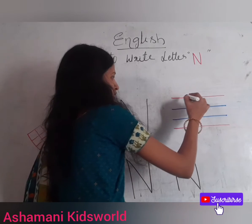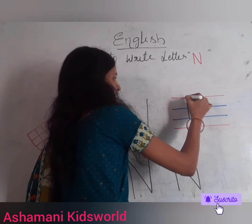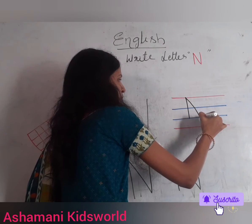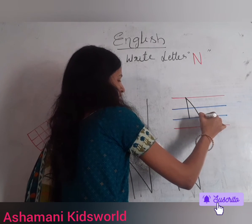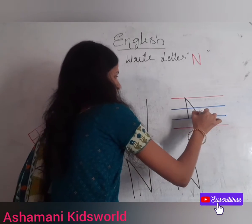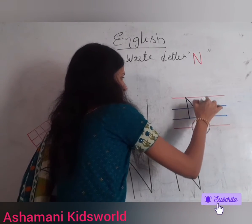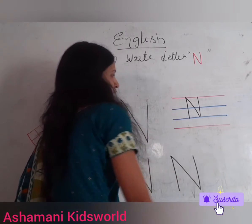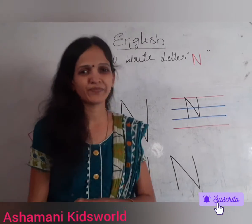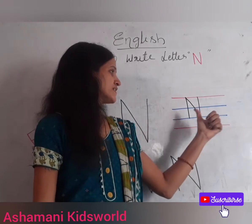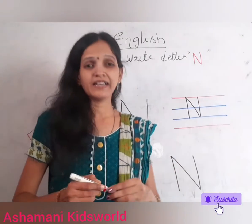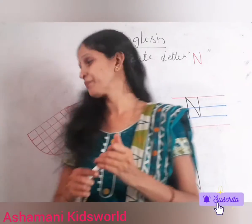After that, you have to write a slanting line from the top red line to the 2nd blue line. And again, go up, up to the top red line. This is letter capital N.